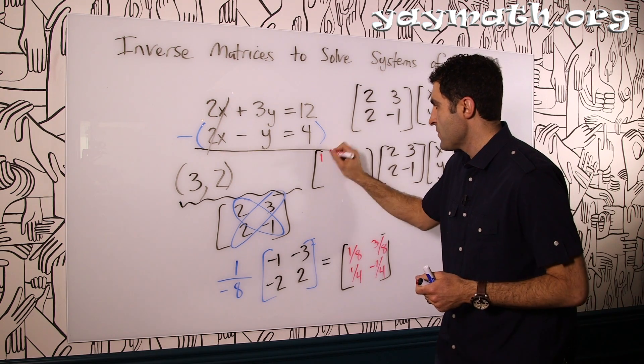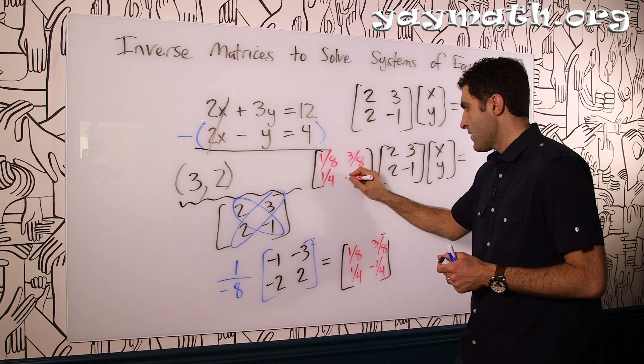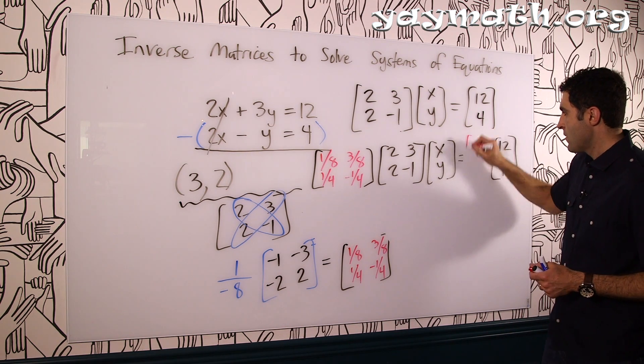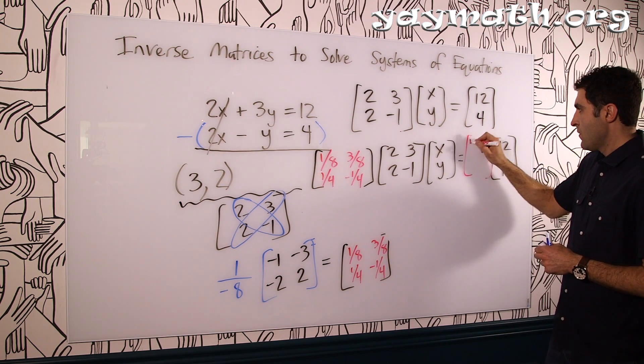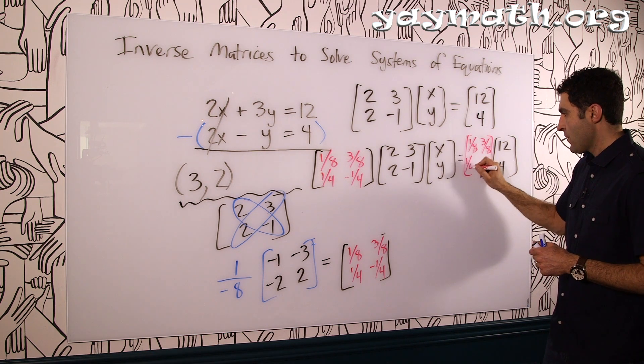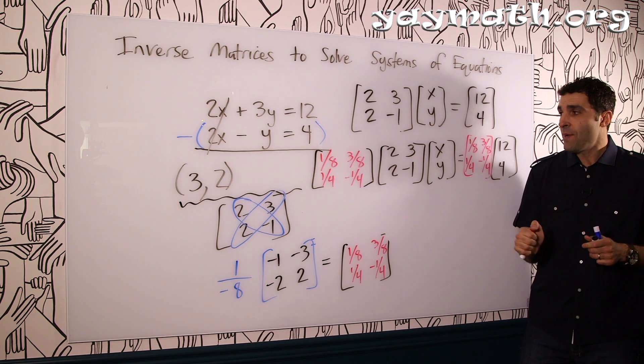And then the inverse goes into both slots: 1/8, 1/4, 3/8, negative 1/4, 1/8, 3/8, 1/4, negative 1/4.